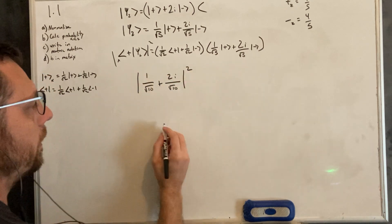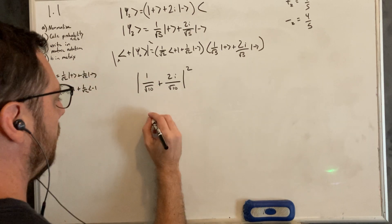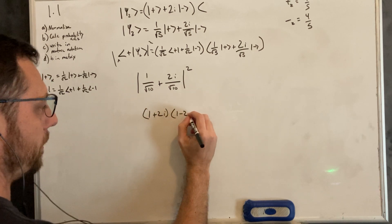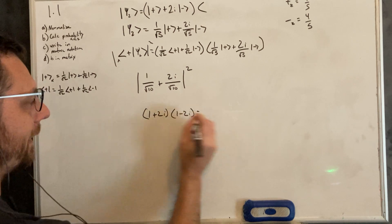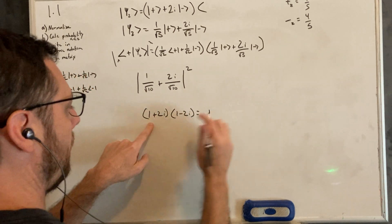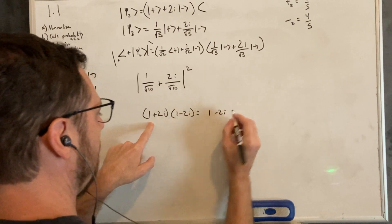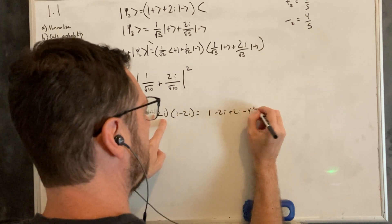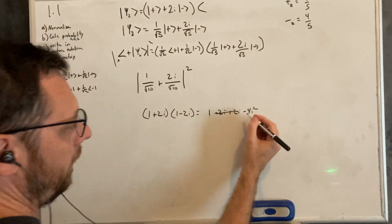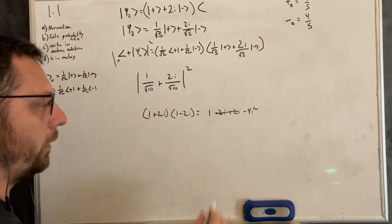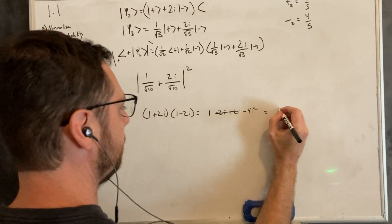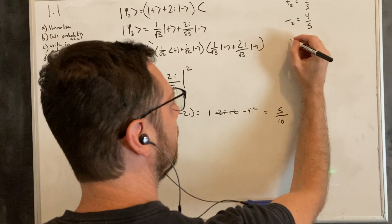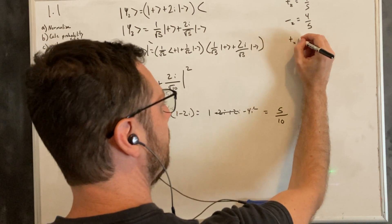Squaring this — in the numerator we have 1 plus 2i, and we need to multiply by its complex conjugate, 1 minus 2i. That gives us 1 minus 2i plus 2i minus 4i squared. The 2i terms cancel, and i squared is negative 1, so that cancels the negative, leaving 1 plus 4 equals 5 in the numerator and 10 in the denominator. So that's 1 half. The probability of plus in the x direction is 1 half.